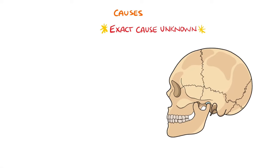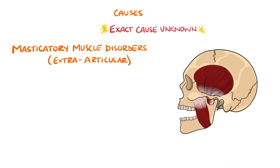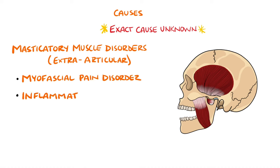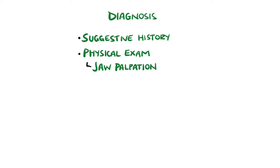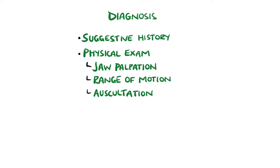Masticatory muscle disorders could be myofascial pain disorder, inflammation such as myositis, or muscle spasms. The diagnosis is primarily made based on the history and physical exam, which can include painful palpation of the temporo-mandibular joint, abnormal movement of the jaw or poor range of motion, and associated clicking sounds, although these are not specific.